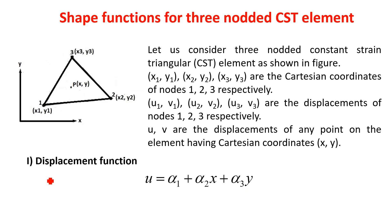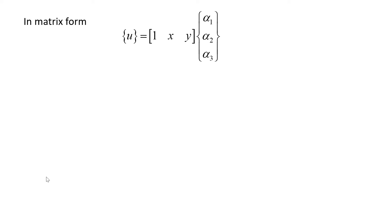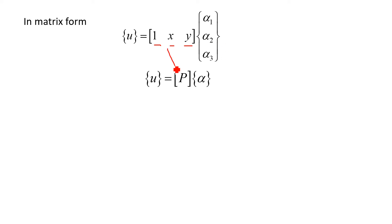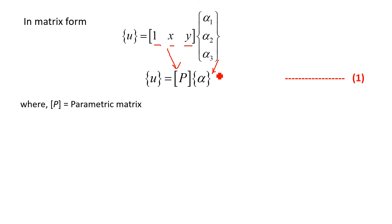So U equal to alpha1 plus alpha2·X plus alpha3·Y. If you write down the same displacement function in matrix form, U equals [1, X, Y] multiplied by [alpha1, alpha2, alpha3], where the row vector [1, X, Y] is the parametric matrix P and the vector [alpha1, alpha2, alpha3] is the generalized coordinate vector alpha. In compact form, U equal to P times alpha. This is equation number 1, where P is the parametric matrix.